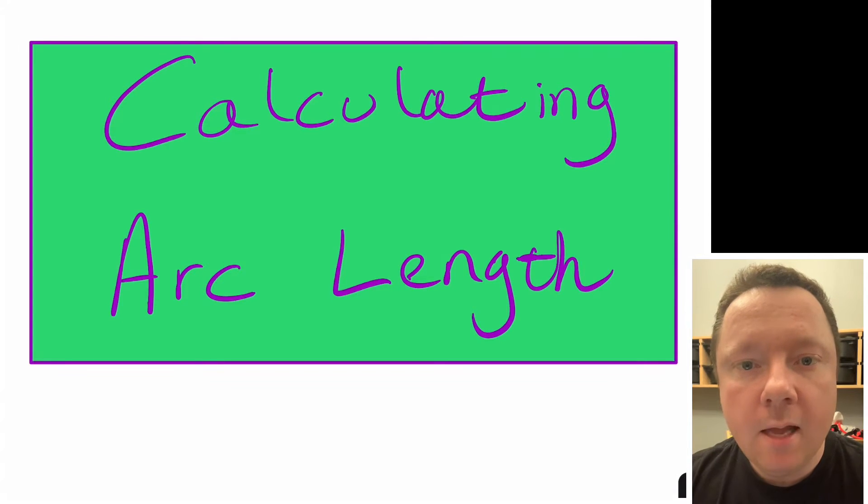Mr Cullen here from Cullen Maths. Today we're going to be looking at how to calculate arc length. We'll be looking at fractions of a circle instead of a full circle and working out the bit of the circle on the perimeter, the circumference, which would be part of that fraction of a circle. We're going to look at a few examples of how to do that.